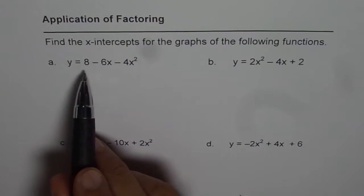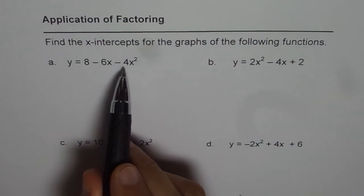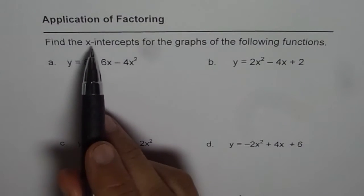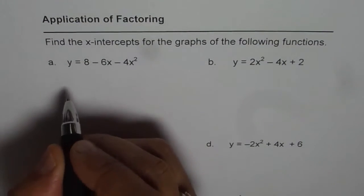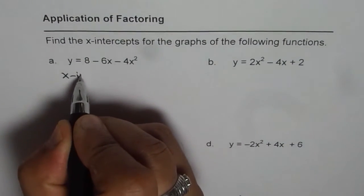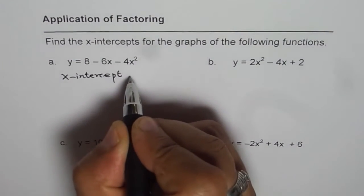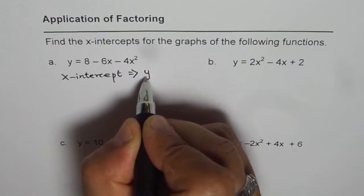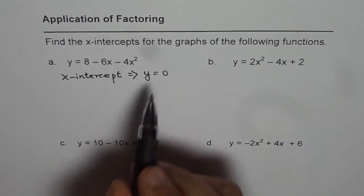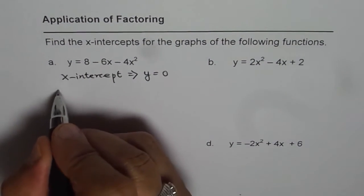The first one is y equals to 8 minus 6x minus 4x squared. When we say x-intercept, that means what? x-intercept means that y value is 0, right? It means y equals to 0 for that particular point. So equating y equals to 0 in the equation,